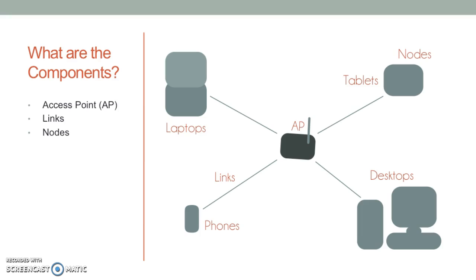While wireless networks can be set up many different ways, the basic components remain the same. The heart of the network is the access point, and the links connect it to the nodes. The graphic here illustrates this and starts building definitions for these terms. You can see that nodes are your devices, links are some kind of connector, and the access point — like yourself in your friend network — is the hub directing the activities.